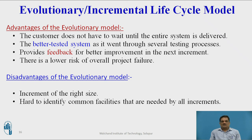The disadvantage of this evolutionary model is determining the right size of each increment, as there is a constraint in increment size — usually about 20,000 lines of code — making it very difficult to accommodate all customer needs. The second disadvantage is identifying common facilities needed by all increments. Since development begins with outline requirements that are not in detail, it is very difficult to define what language, technology, and hardware are required.